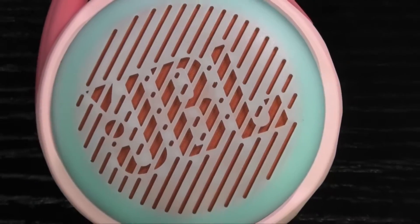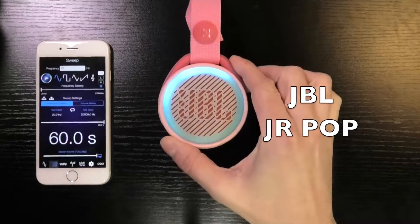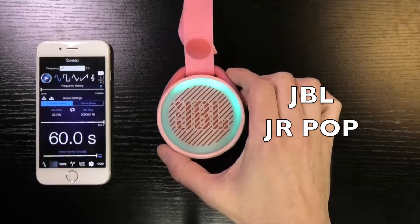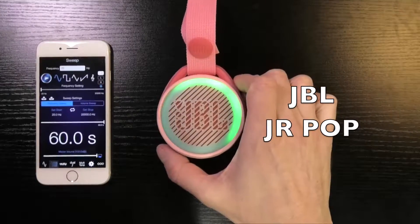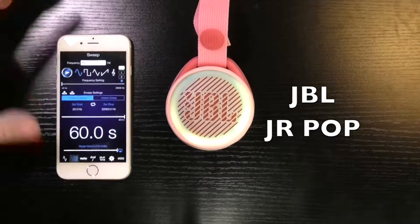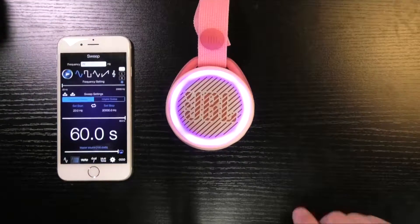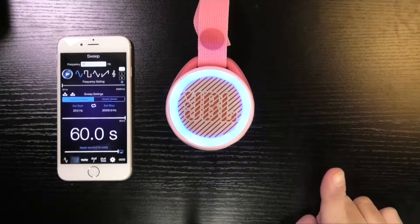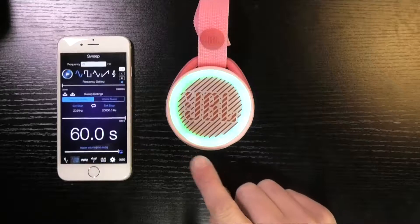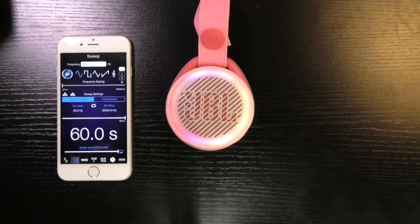All right, so we have here the JBL Jr. Pop wireless Bluetooth speaker and we want to go through a little frequency response test. I have this app here that helps me do this. This phone is connected to the speaker and then here on the right side we're going to see the output level of the speaker.